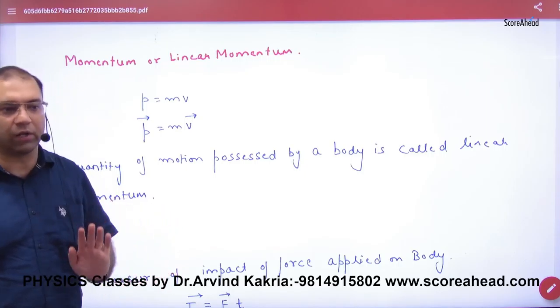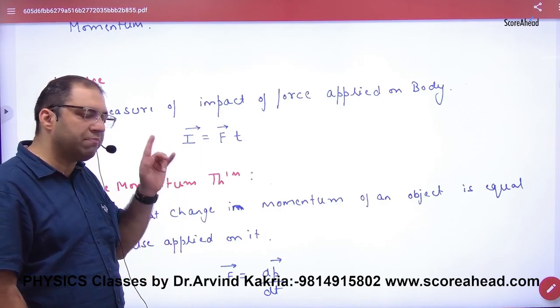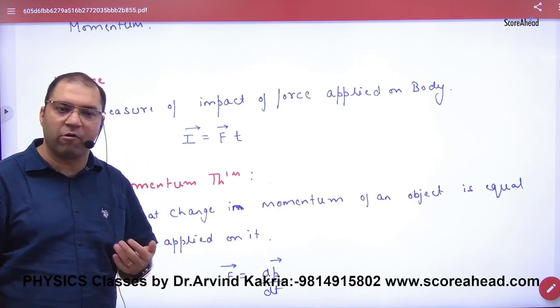Momentum automatically is a vector. Okay? Next is impulse. Impulse is the measure of impact of force applied on a body. We represent impulse by I, and its formula is force into time.